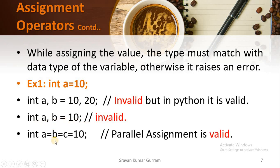We can use parallel assignment in Java, and that is valid. See: int a = b = c = 10. First, the value 10 will be assigned to the variable c. The value of c will be assigned to b. The value of b will be assigned to a.